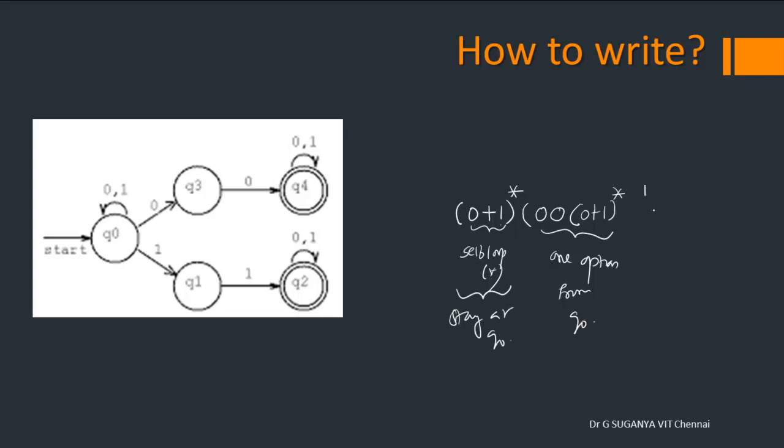So, you can reach Q1 by reading the input symbol 1. Then you can reach Q2 by reading the input symbol 1. Then you can stay at Q2 by reading 0 or 1 the whole star.